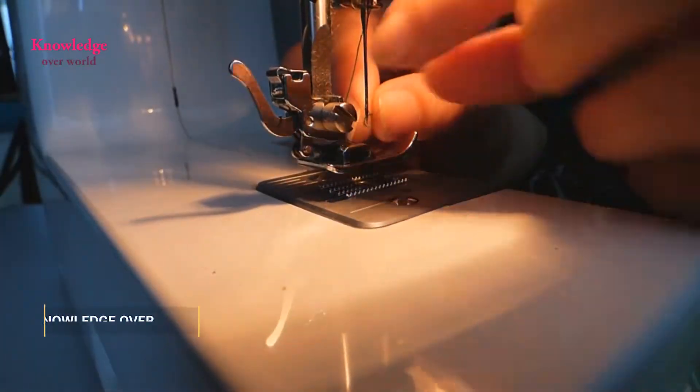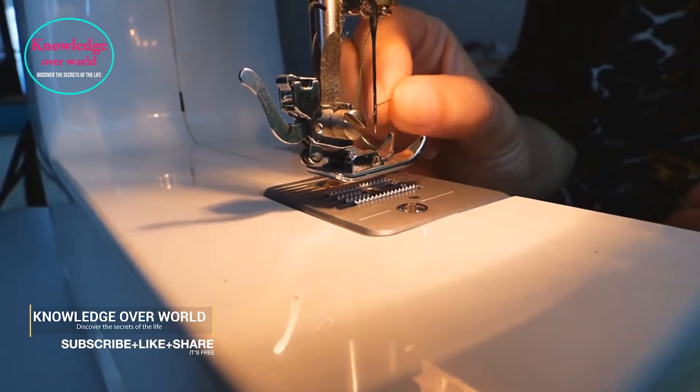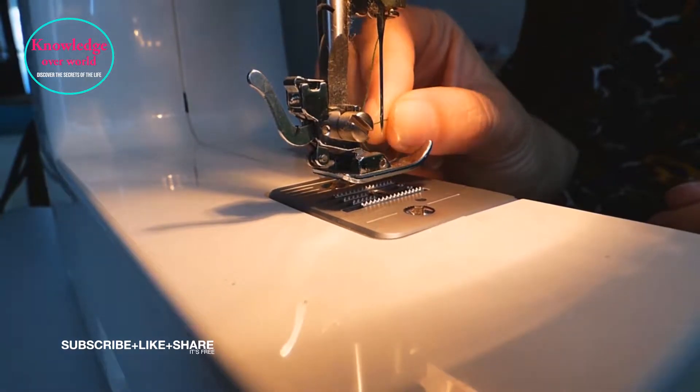In 1882, the inventor Elias Howe invented a sewing machine consisting of a needle with a hole in it.